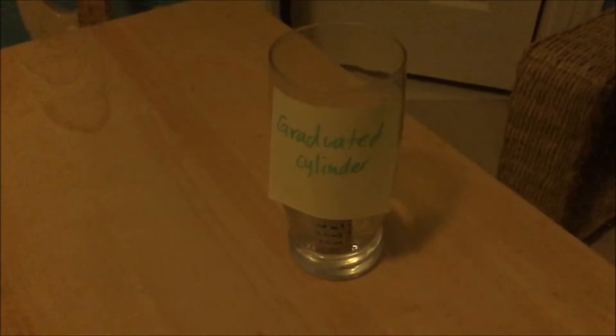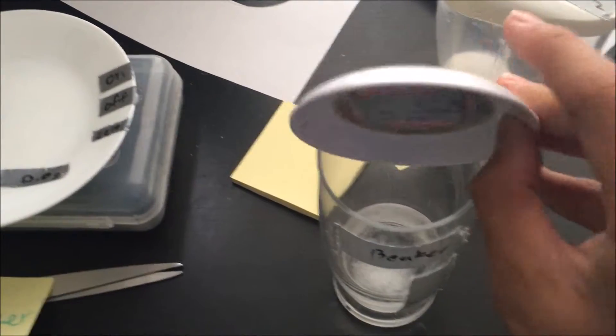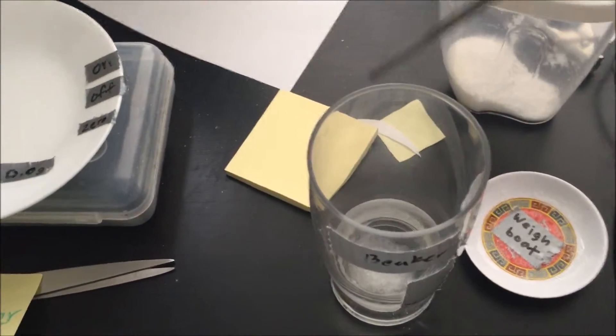Measure out 30 milliliters of water using the graduated cylinder. Pour nickel chloride and water into a beaker, then mix it with a stirring rod.